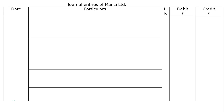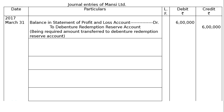Mansi Limited had 600 10% debentures of Rs. 100 each. We have to read the question properly and pass journal entries for redemption of debentures. We draw the format first — journal entries of Mansi Limited — with date, particulars, ledger folio, and debit and credit columns with rupee symbols. The first entry is on 31st March 2017: Statement of Profit and Loss debited to Debenture Redemption Reserve account, being the required amount transferred to Debenture Redemption Reserve account.